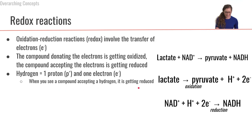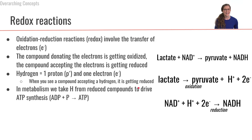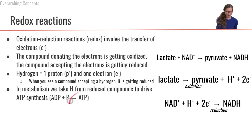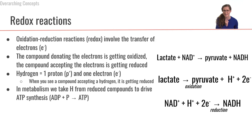When you see a compound accepting a hydrogen, it's getting reduced. In metabolism, what we're going to be doing is taking these hydrogens from the reduced compounds and using them to drive the synthesis of ATP — that is, taking ADP with two phosphates plus another phosphate group and adding that phosphate group to create ATP, the energy currency of our cells. That is why we care about the hydrogens in metabolism.